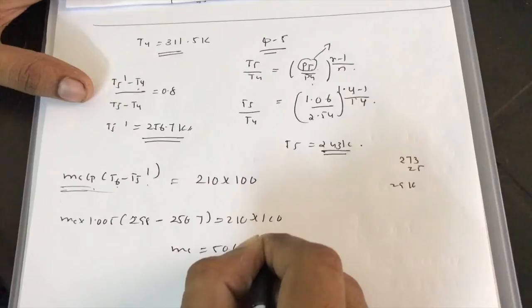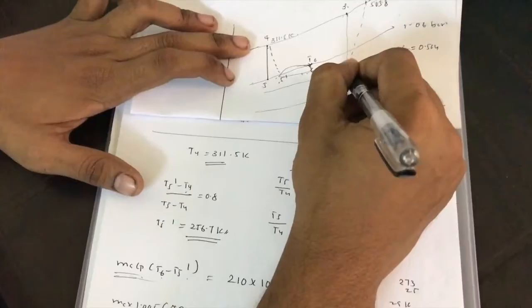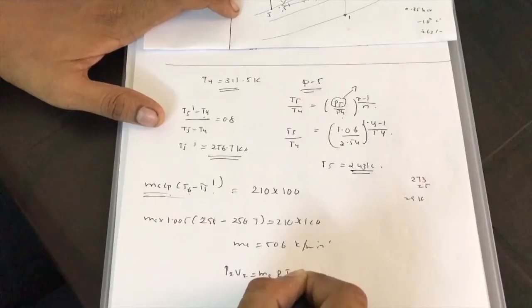MA = 506 kg/min. Now we are asked to find the volume of air entering the compressor. Using the ideal gas relation: P2·V2 = MA·R·T2.